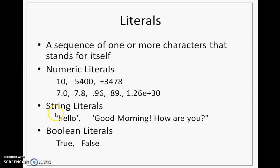Then we have string literals. String literals are sequences of characters enclosed either in single quotes or double quotes. You can choose any one — there is no difference. And finally, we have Boolean literals. Boolean literals can hold only two types of values: either True or False. Note that the T in True and F in False must be capital.